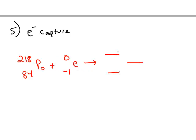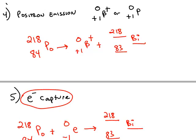218 plus 0 is equal to 218 on the right. 84 and negative 1 makes 83. Notice the electron capture product was bismuth 218. So was the positron emission. The parent and the daughter are always identical for positron emission and electron capture.